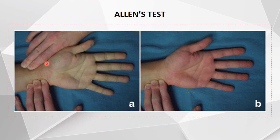This is the Allen's test. We initially occlude both the ulnar and radial arteries and tell the patient to clench his fist. After that, we unclench the fist, release only the ulnar artery, and check for flushing of the hand. If there is flushing of the hand, there is good collateral supply and we can proceed with the procedure.